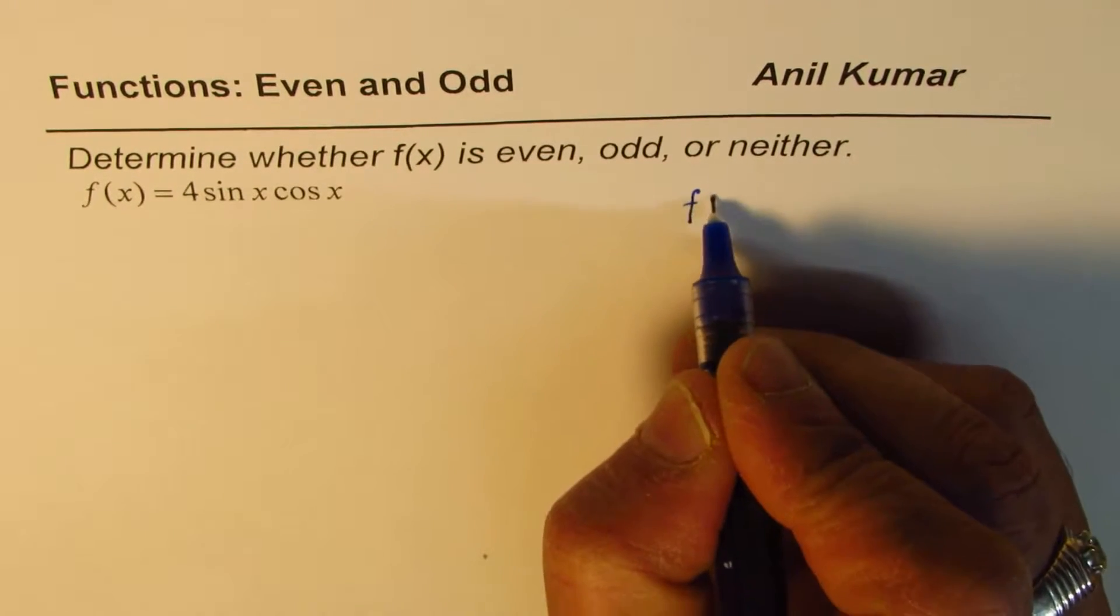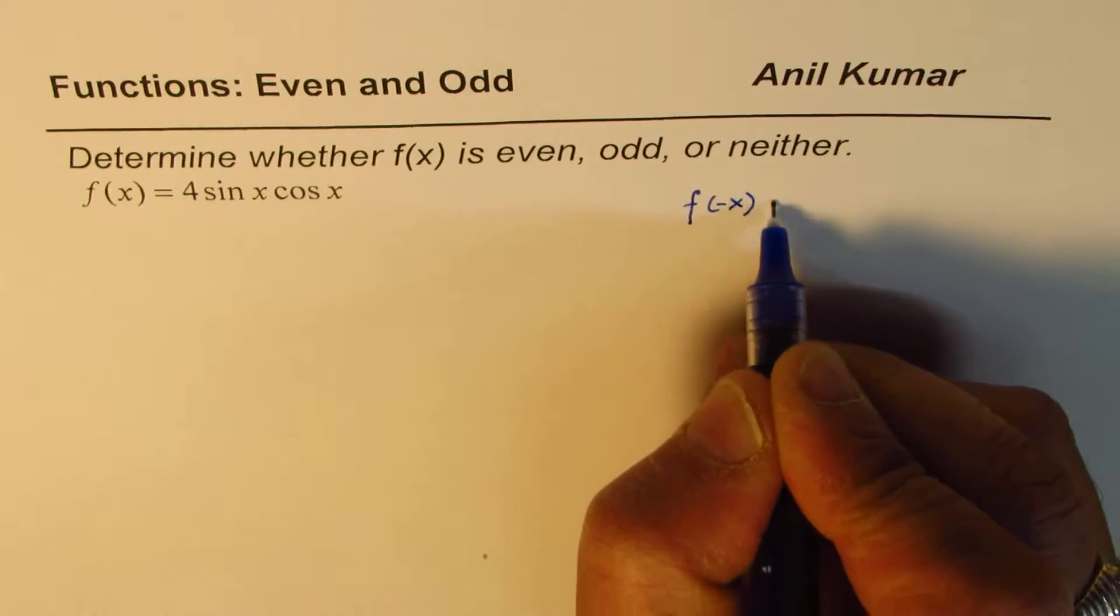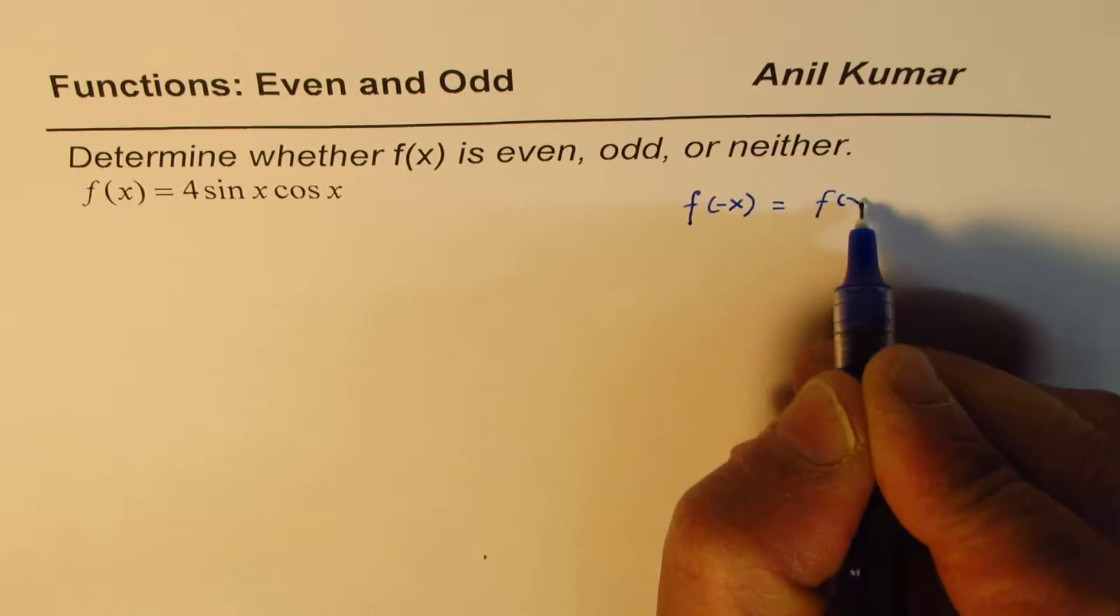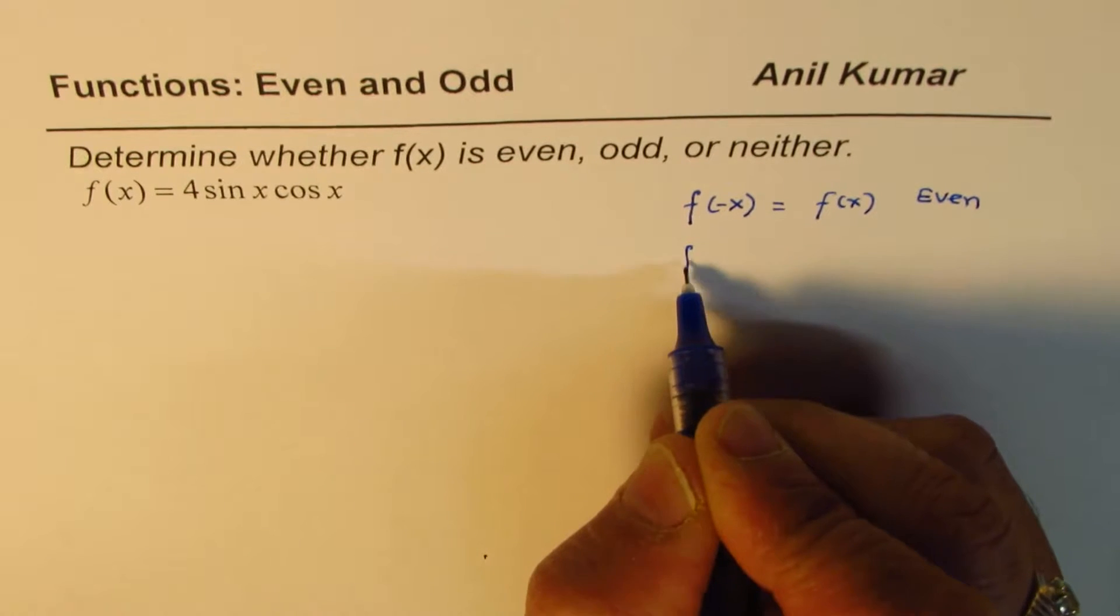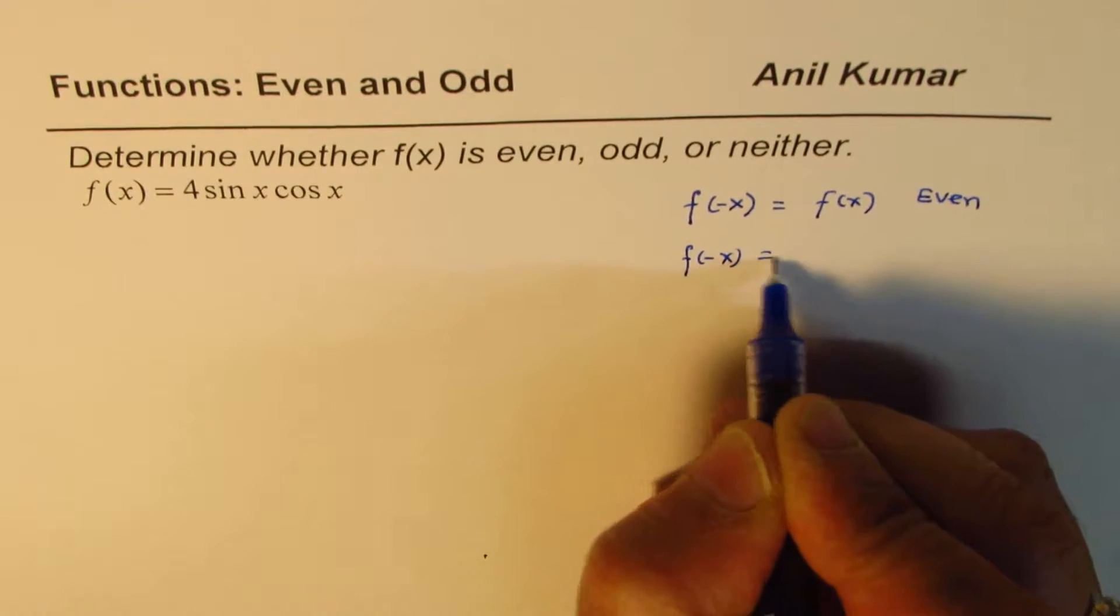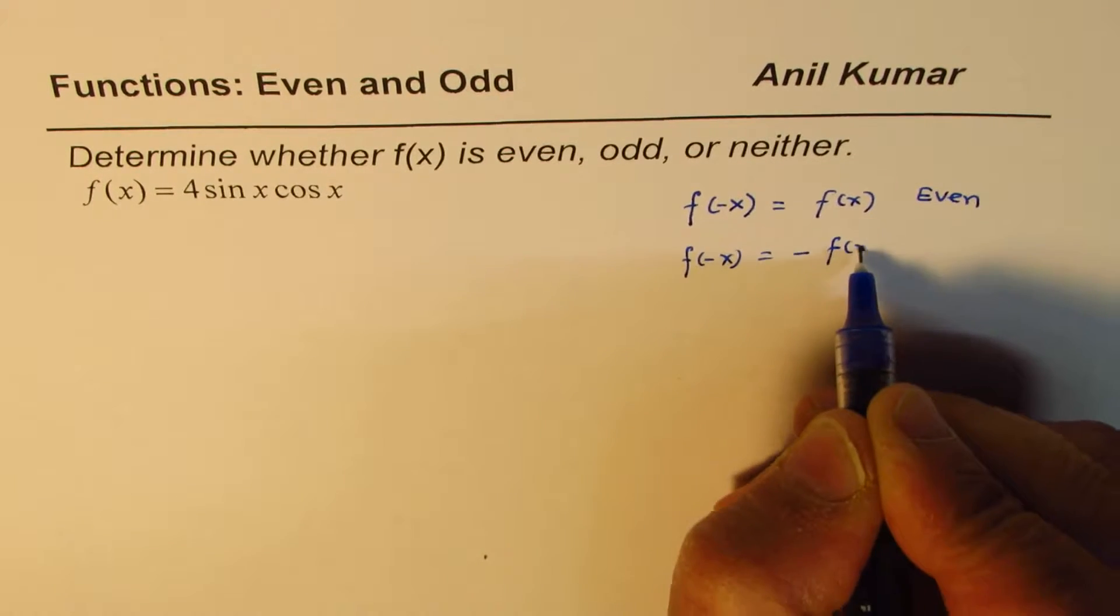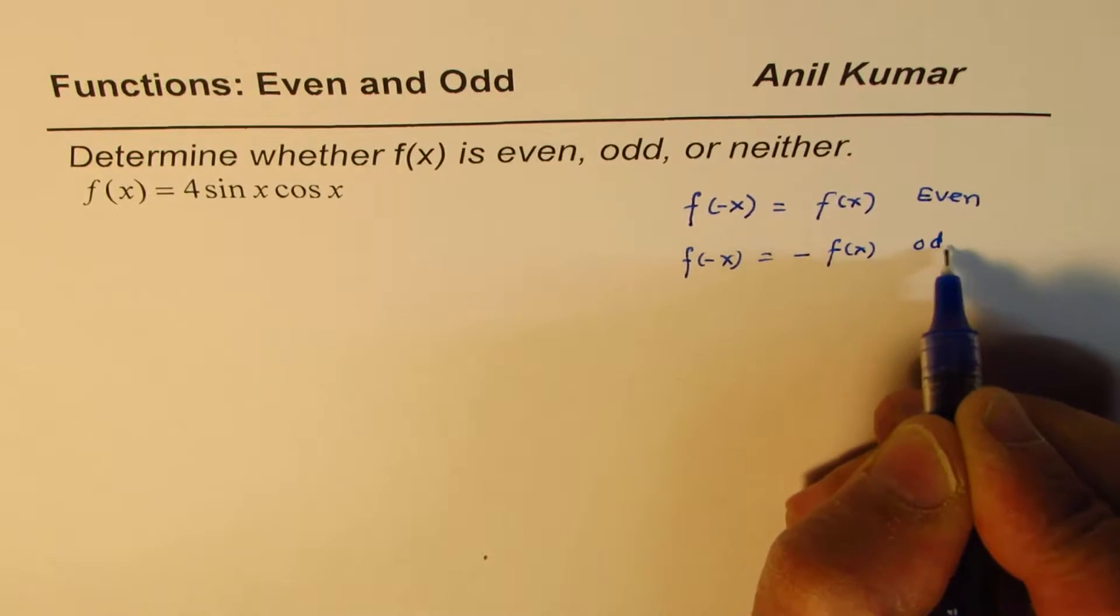Even functions are functions for which f(-x) equals f(x). And for odd functions, f(-x) equals -f(x).